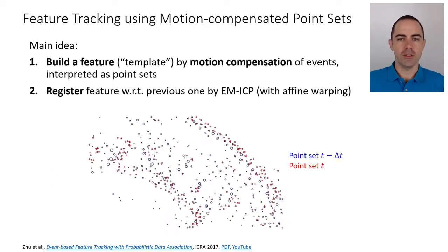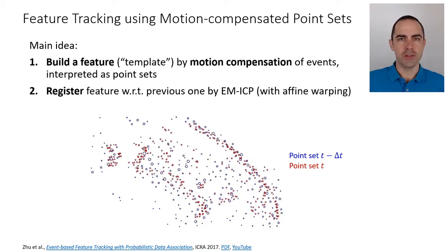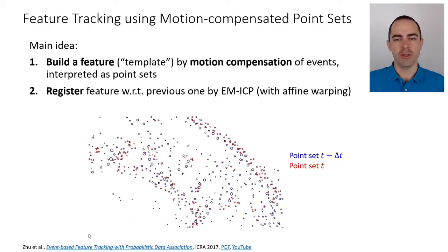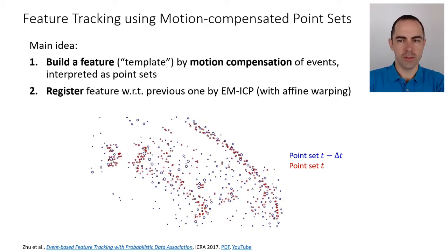The second step is, once you have that, you do this for different volumes of events, and what you do is propagate that feature and use it to line up, to register with the next point set. That's what's shown in this video. There is an initial shape and now the red point set, which is the one at the current time, is lining up with the previous one. This is done using an affine warping.